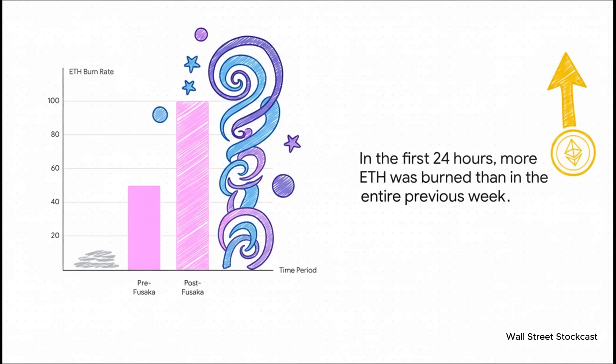Just look at the ETH burn rate. Before the upgrade, it was chugging along at a steady pace. Immediately after December 3rd, it effectively doubled. In fact, the source material says that in the first 24 hours after the upgrade, more ETH was burned than in the entire week before it. This wasn't some gradual ramp up, it was like someone just flipped a giant switch.